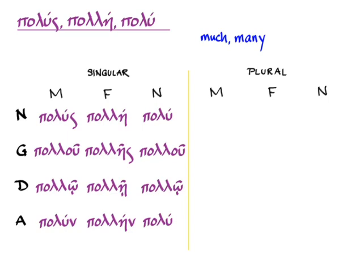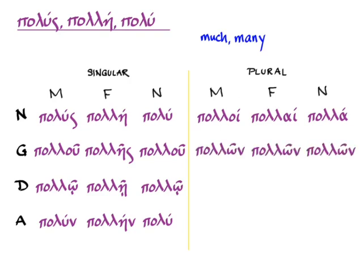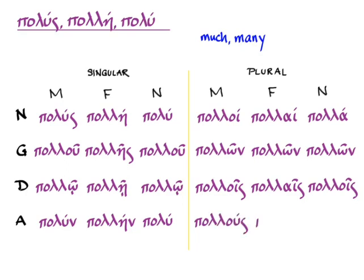Then we go on to the plural. Nominative: polloi, pollai, polla. Genitive plural: pollōn, pollōn, pollōn—the old reliable. Then dative plural: pollois, pollais, pollois. And finally, accusative plural: pollous, pollas, polla.